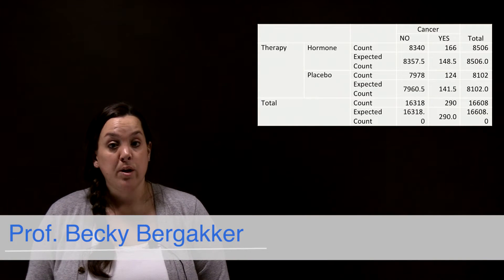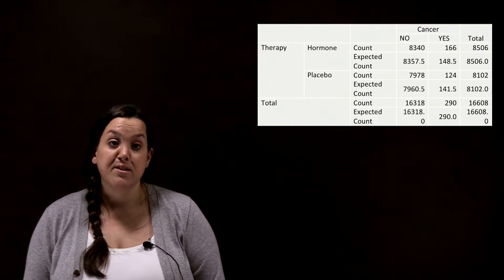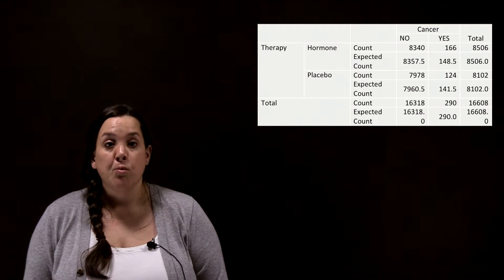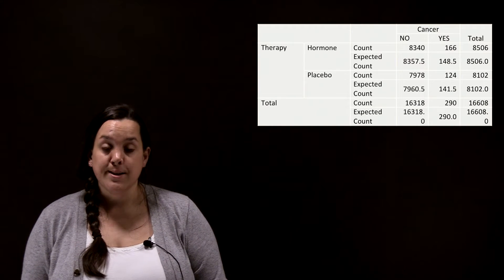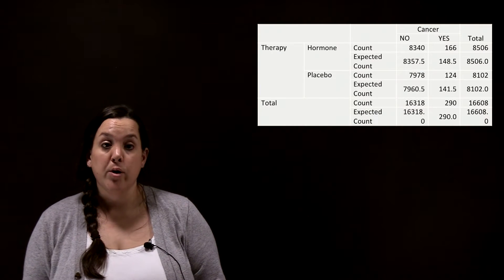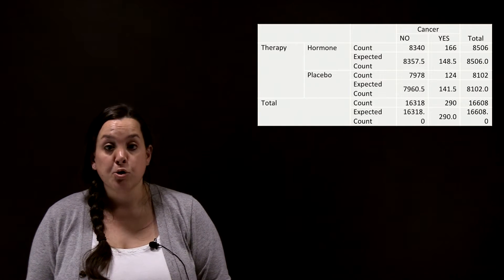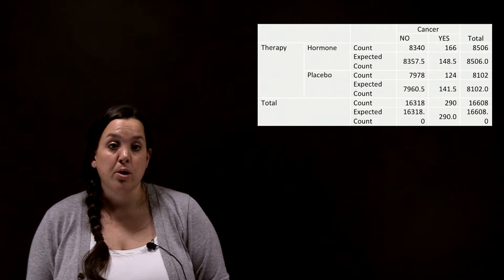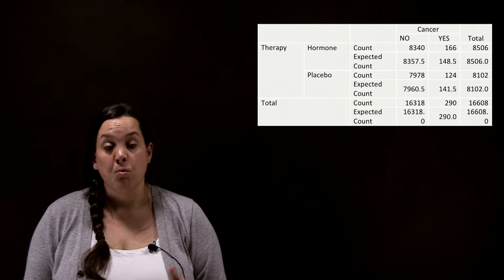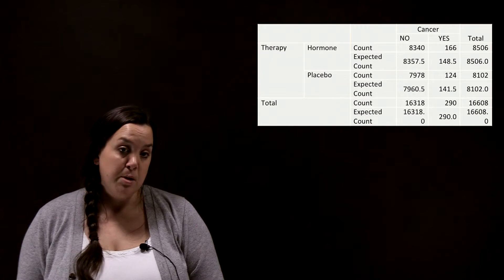We're still in our discussion of the analysis of two categorical variables. Today we're going to be looking at a form of statistical inference or hypothesis testing for a contingency table. When you do a hypothesis test for a contingency table you're looking for a relationship between two categorical variables. Here we're looking at therapy and cancer — this was an actual study done in 2002 looking at postmenopausal women and whether hormone replacement was affecting whether they did or did not have cancer.